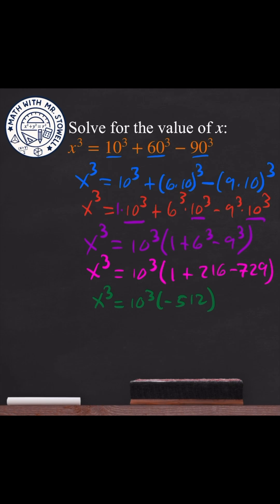We notice that -512 is a cube. In fact, that's (-8)³. So x³ = 10³ × (-8)³.